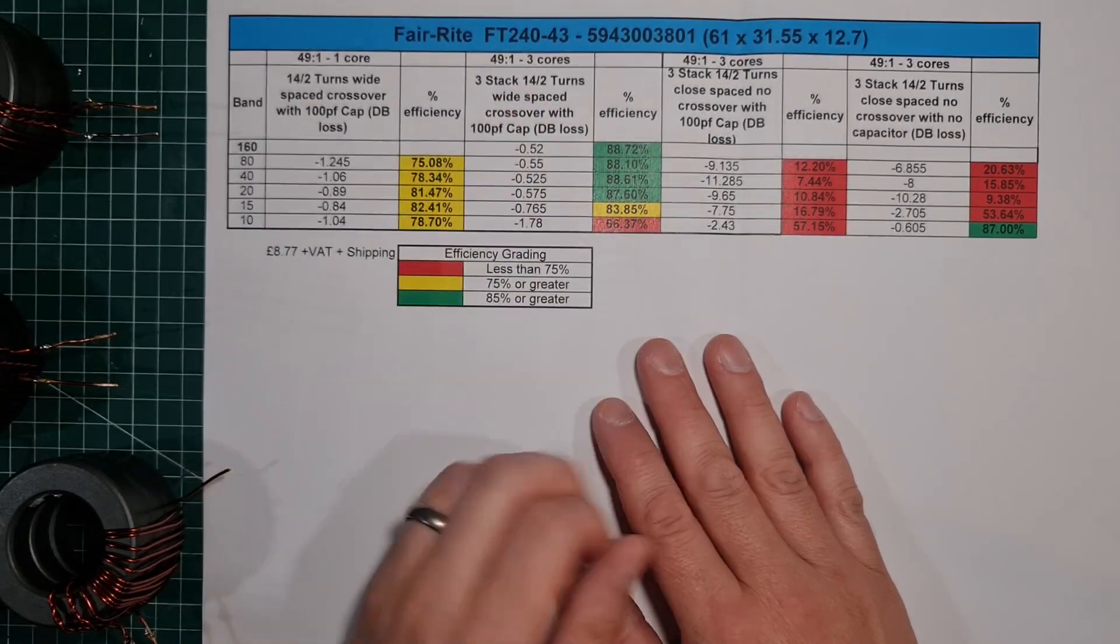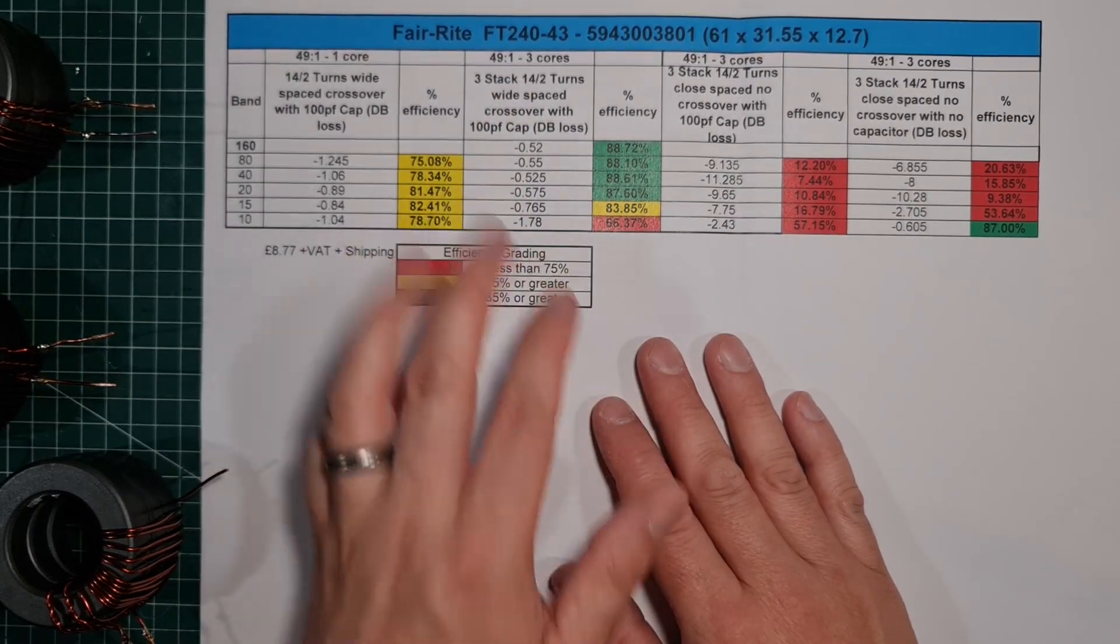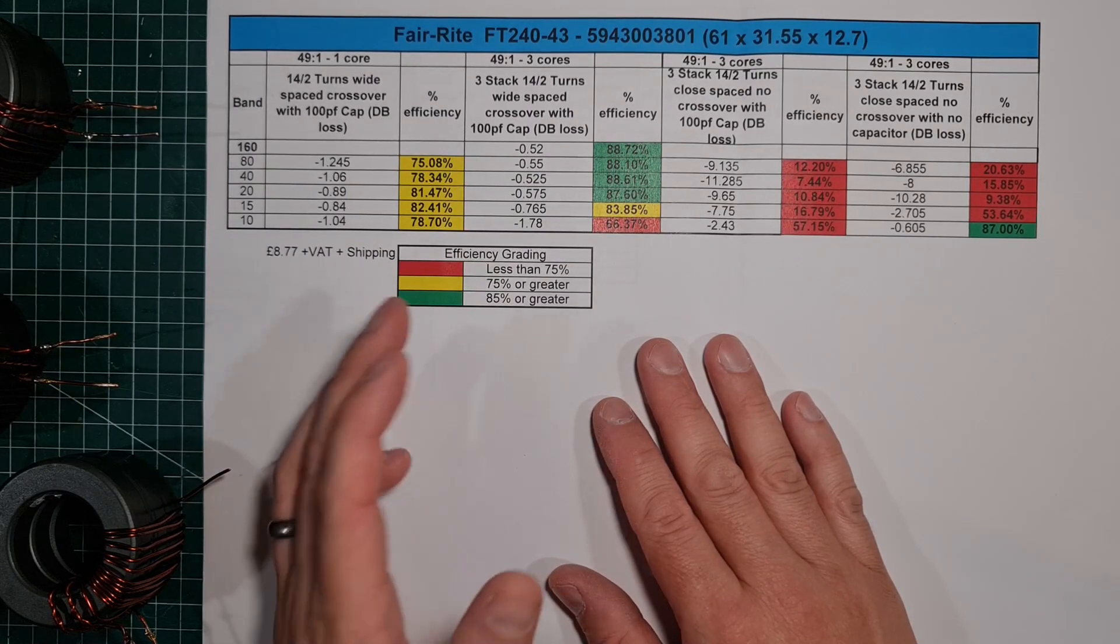This is a three-stack, 240-43, two turns primary, 14 turns secondary.